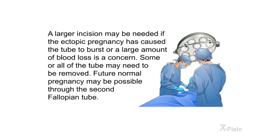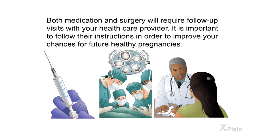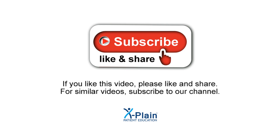A larger incision may be needed if the ectopic pregnancy has caused the tube to burst or if a large amount of blood loss is a concern. Some or all of the tube may need to be removed, but future normal pregnancy may still be possible through the second fallopian tube. Both medication and surgery will require follow-up visits with your health care provider, and it is important to follow their instructions to improve your chances for future healthy pregnancies.